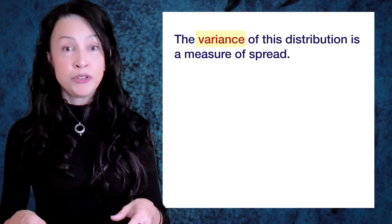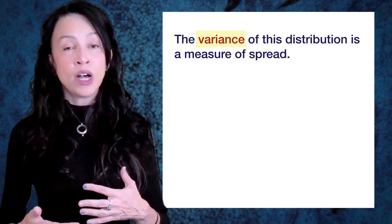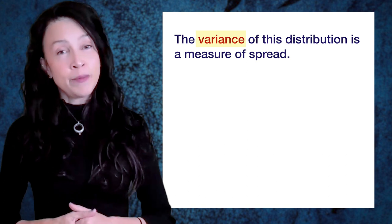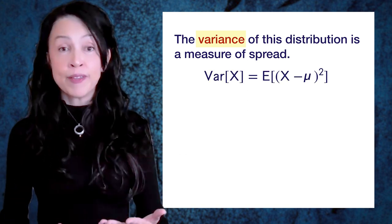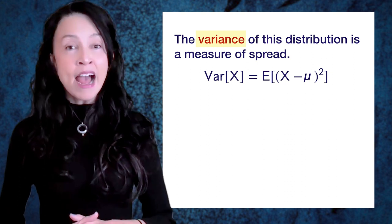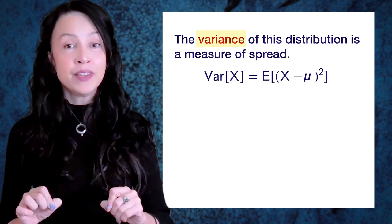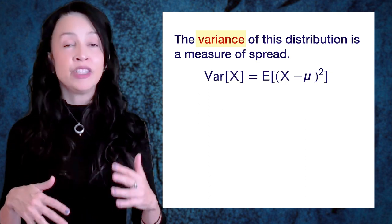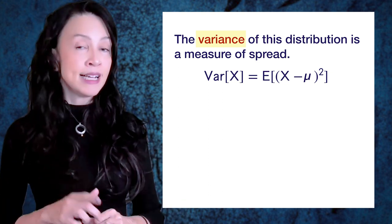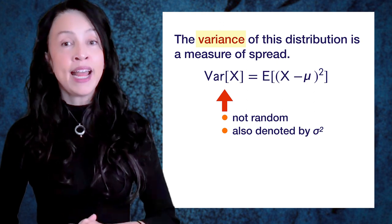The variance of this distribution, or any distribution, is a measure of how spread out it is. The variance for a random variable X is denoted by VAR[X] and it's defined to be the expected value, or probability weighted average, of the squared deviations of the random variable from its mean mu. Why do we use a square? We could use an absolute value, but that makes the math positively icky. We have a lot of nice results with a square, and we don't want to drop the square entirely because this expectation by design will always be 0 if we do that. This variance is not random, and it gets a Greek letter - it's usually denoted by sigma squared.